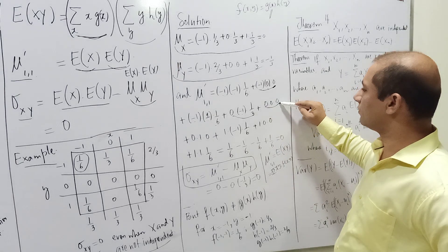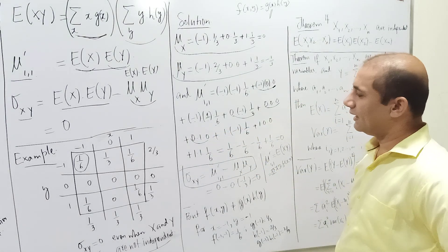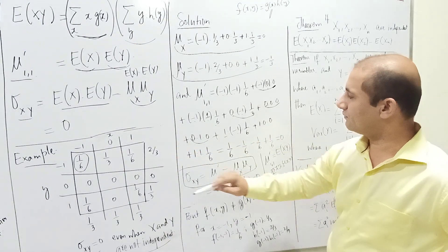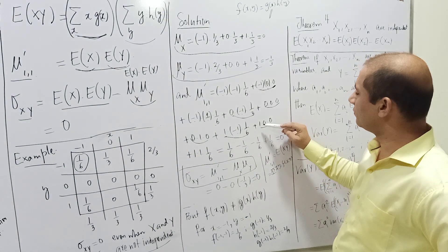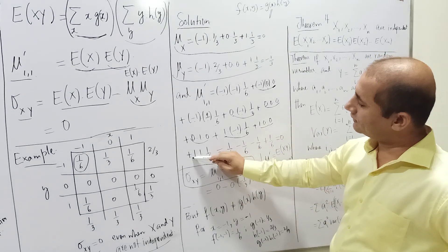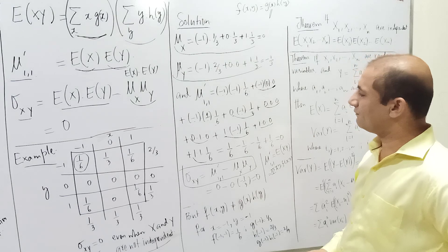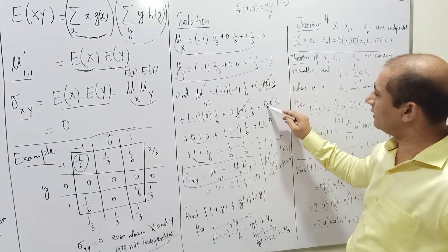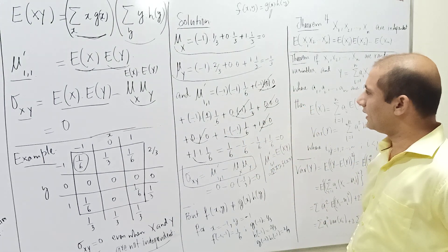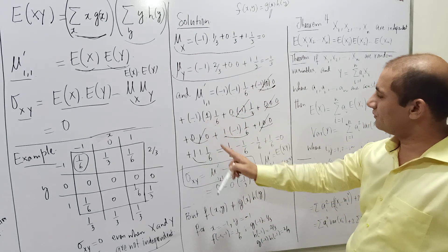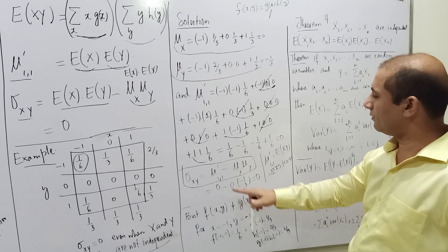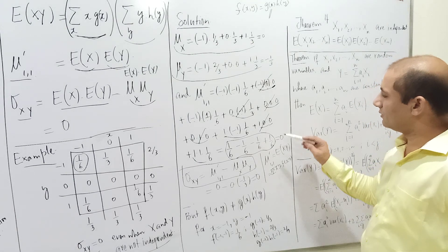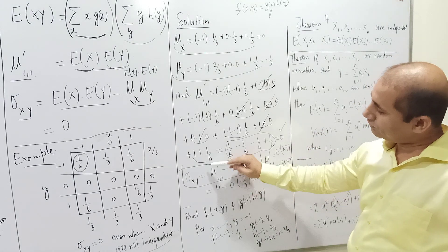Continuing: when X=1, Y=-1: F(1,-1)=1/6; when X=1, Y=0: F=0; when X=1, Y=1: F=1/6. Simplifying, the nonzero terms are 1/6 - 1/6 - 1/6 + 1/6 = 0. So mu_11_dash = 0.